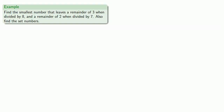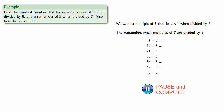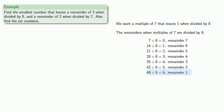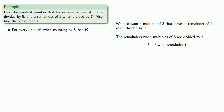Let's try a simple problem: find the smallest number that leaves a remainder of three when divided by eight, and a remainder of two when divided by seven, and find those set numbers. To change only the remainder when dividing by eight, we want a multiple of seven that leaves remainder one when divided by eight. Checking multiples of seven, forty-nine divided by eight leaves remainder one, so for every unit left when counting by eights, set forty-nine. For the other divisor, we want a multiple of eight that leaves remainder one when divided by seven. Eight itself leaves remainder one, so for every unit left when counting by sevens, set eight.